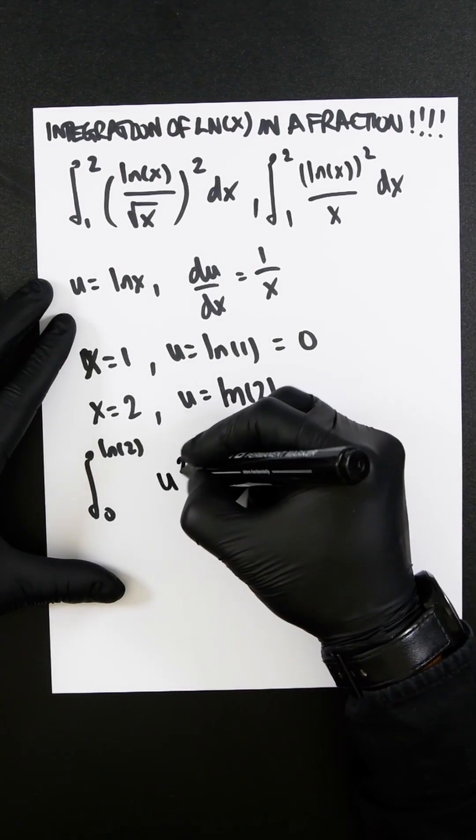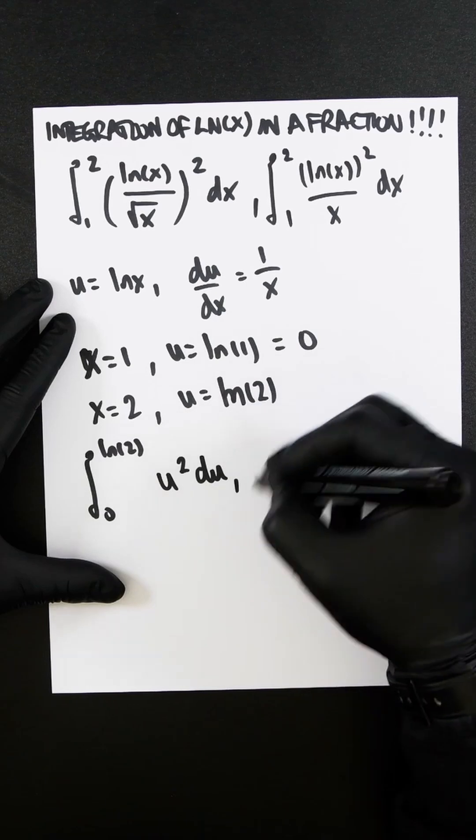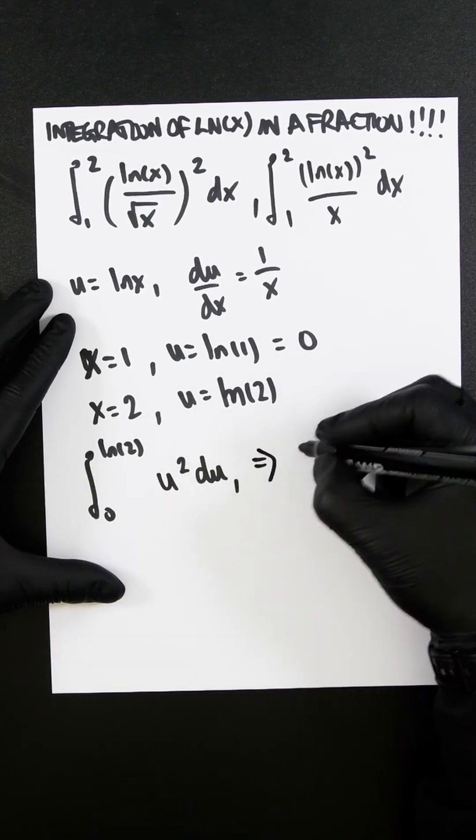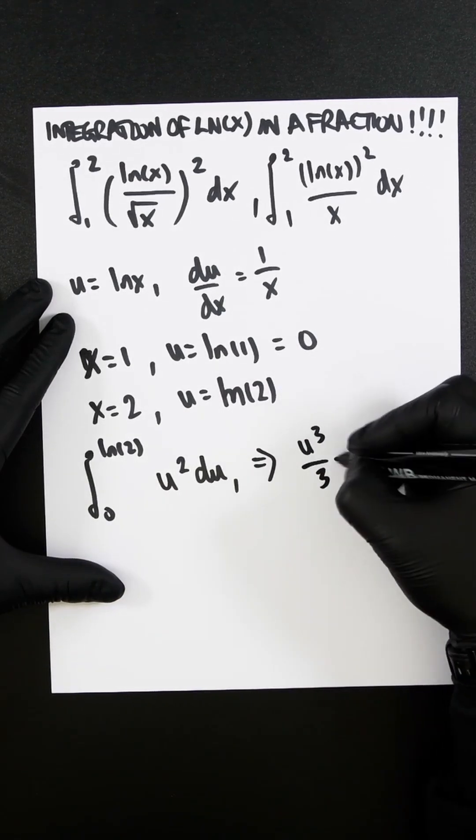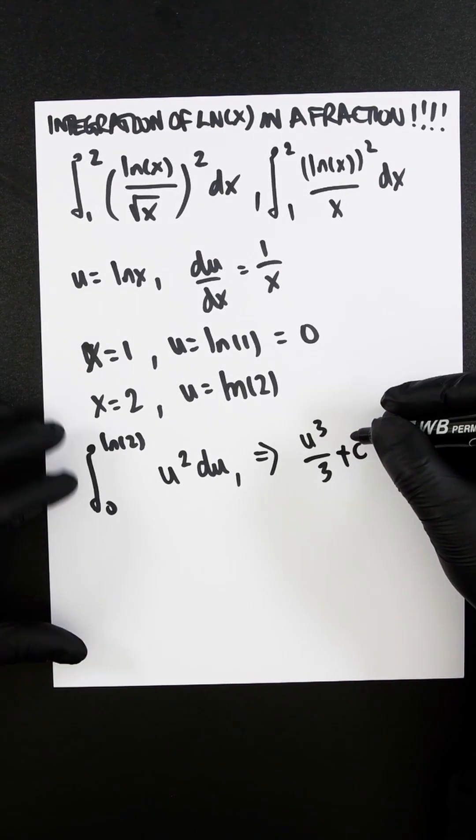you would have u squared du. We integrate this now. So this would go to u cubed over 3 plus c. We don't really need to care about the constant.